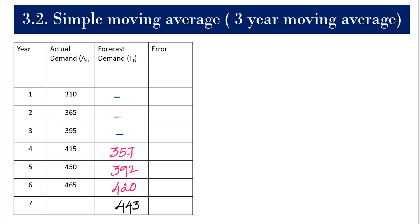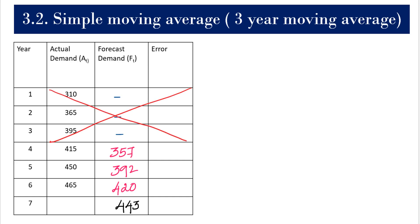Error can be calculated only when you have both actual data and forecast data. For periods 1, 2, and 3 we do not have any forecast demand, so we cannot calculate the forecast error. Similarly, for year 7 we do not have the actual data. This means we will be calculating the error only for years 4, 5, and 6.